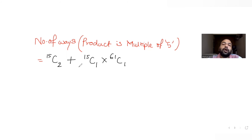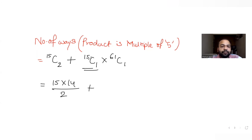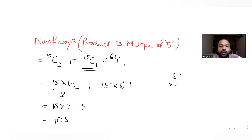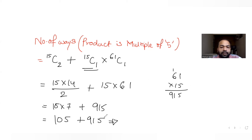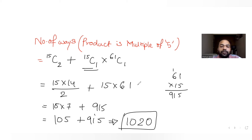The other case is that we select one number from the 15 multiples of 5 and one from the 61 non-multiples of 5, so the product also becomes a multiple of 5 because one factor is already a multiple of 5. This gives 15 times 61. So the total is 15C2 plus 15 times 61, which equals 15 times 14 divided by 2 plus 15 times 61, giving 105 plus 915 equals 1020.